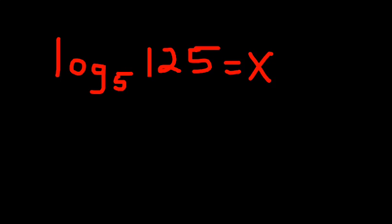The first kind involves a log where the missing x is the exponent. We have base 5, argument 125, and x is the exponent. To solve this we need to rewrite as an exponent — the base is the number we're raising to a power, x is the exponent, and that equals 125.